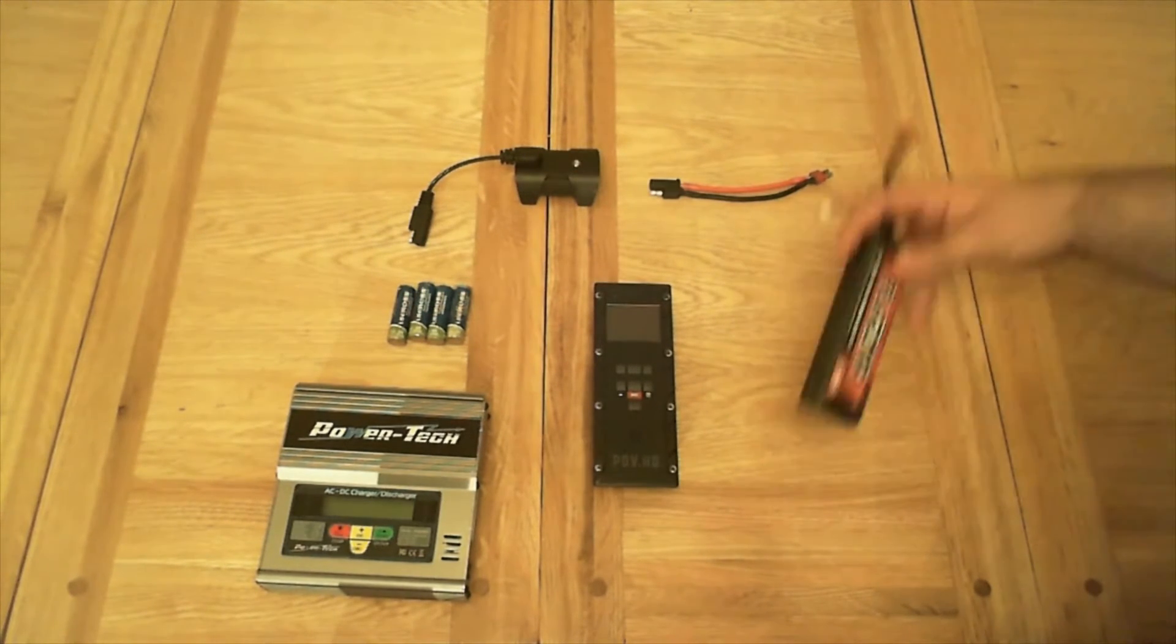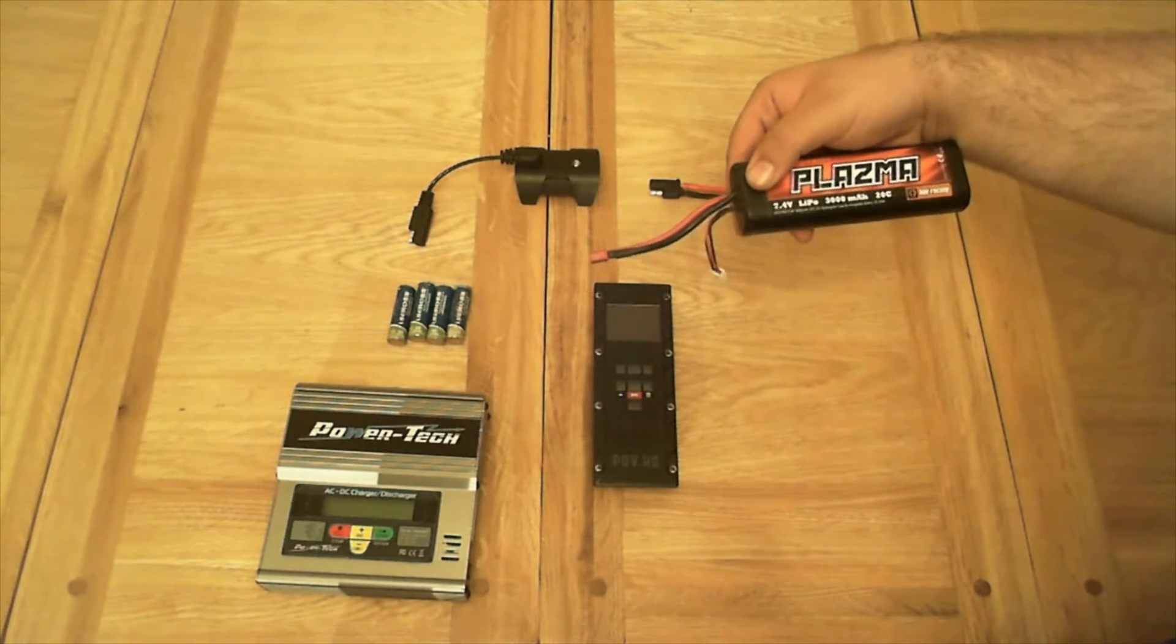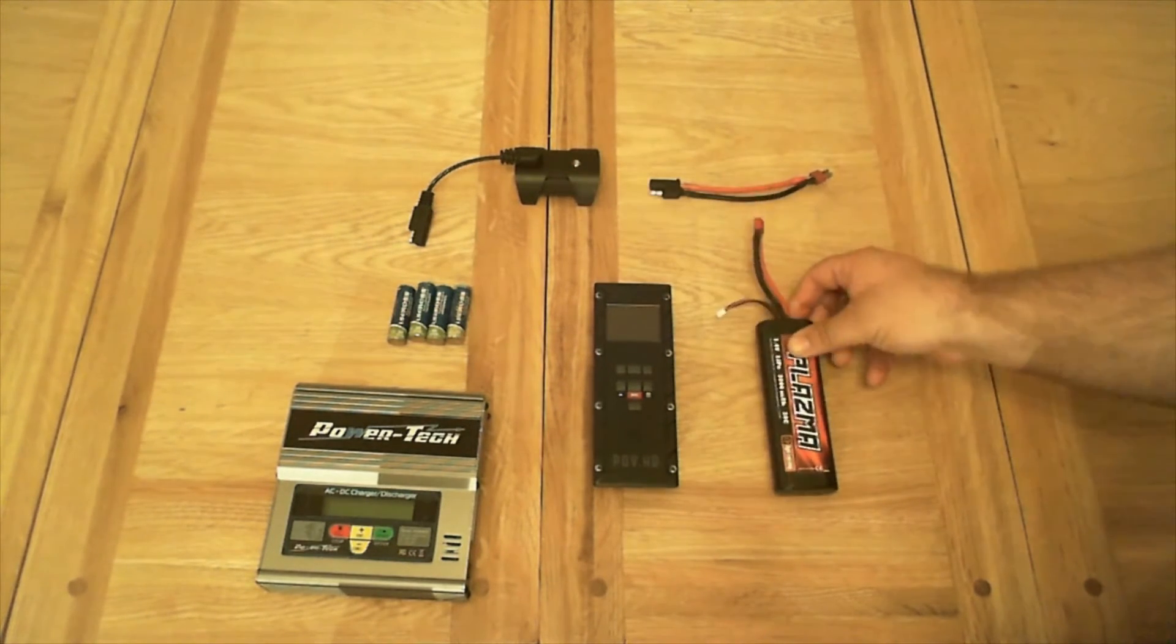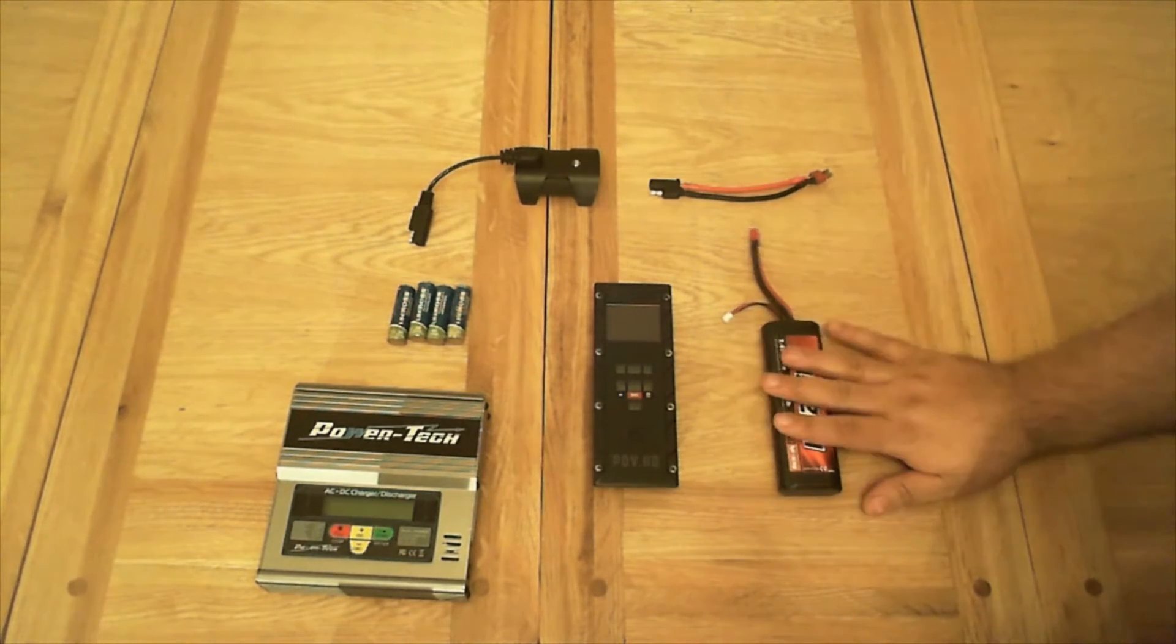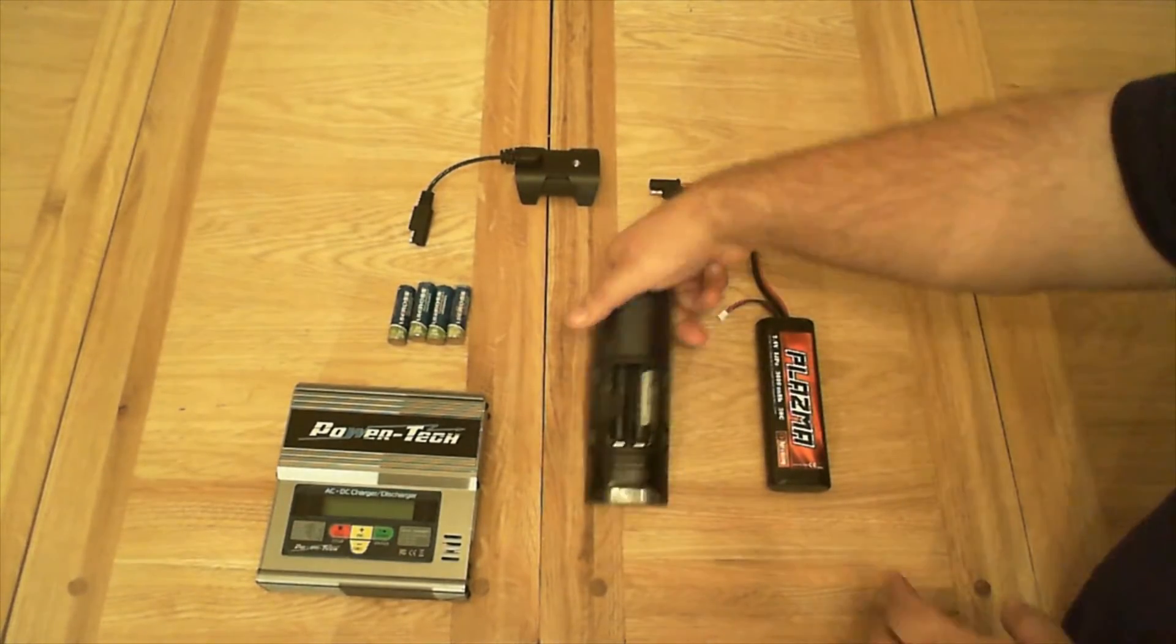This battery comes with remote control cars. It's a LiPo battery, 7.4 volts, 300mAh, that gives me about 5 hours on the POV. You will need the Moto kit that comes with the POV HD.